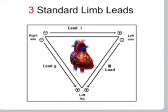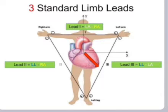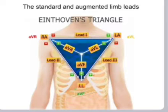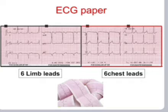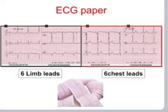Standard limb leads — Lead I, Lead II, and Lead III — form Einthoven's triangle, along with AVL, AVR, and AVF. The ECG paper displays six limb leads and six chest leads as depicted in the figure.